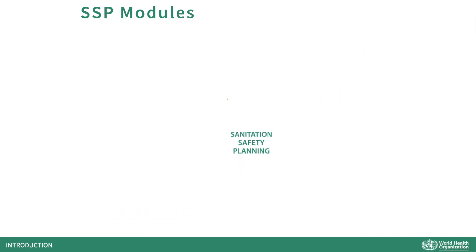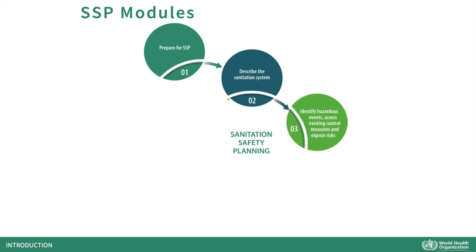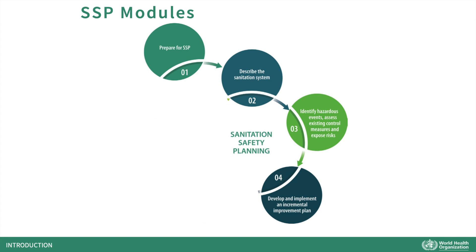In total, the SSP methodology consists of six modules. In Module 1, we define the SSP area, SSP priorities and membership of the team. In Module 2, we prepare a complete description of the sanitation system. In Module 3, we identify hazards and hazardous events and carry out a health risk assessment, including the effects of climate change. In Module 4, we select improvement measures that address the highest risks and use selected options to develop and implement an incremental improvement plan. In Module 5, we prepare a monitoring and verification plan.